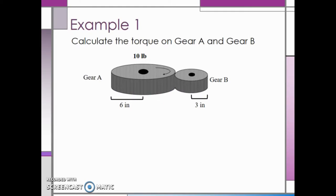Let's take a look at a couple of examples of torque calculations with gears. We want to calculate the torque on gear A and gear B. We see that 10 pounds of force is applied by a shaft on gear A. The radius of gear A is 6 inches, while the radius of gear B is 3 inches. We know that torque is equal to the force applied multiplied by the radius in feet.